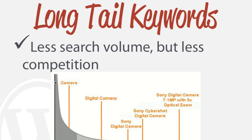If we were a huge website like Yahoo, Answers.com, or HubPages, competing for 'camera' would be more feasible. But for us, we're going to look for these long tail keywords. We want to target our blog posts to really focus around certain long tail keywords — choose one for our blog post and try to build our content around that term. The first step in SEO for us is always choosing that long tail keyword.